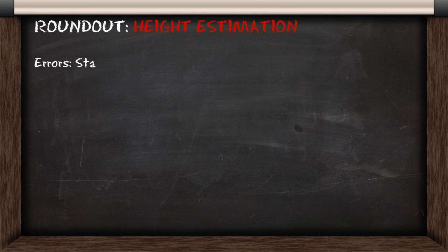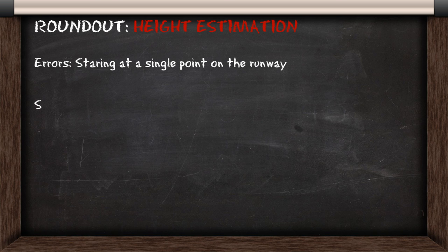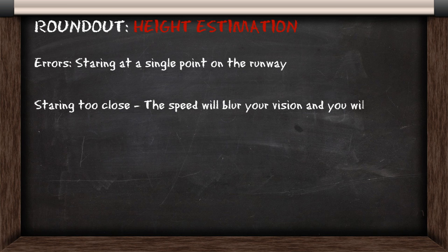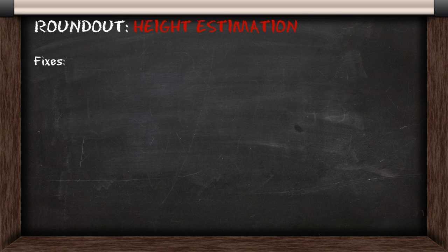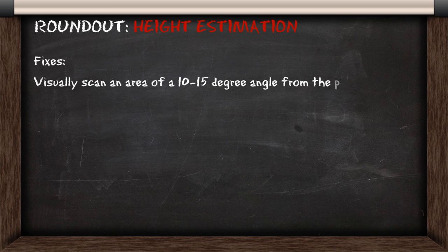Another major error results from bad height estimation. This occurs when you stare at a single point on the runway. If you stare too close, the speed will blur your vision and you will round out too high. If you're staring too far away, you lose your depth perception and you end up rounding out too low.